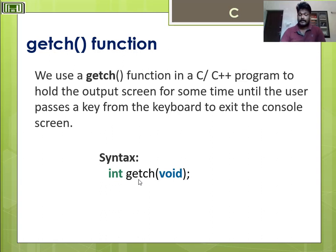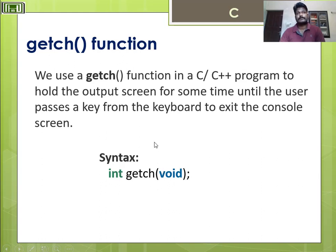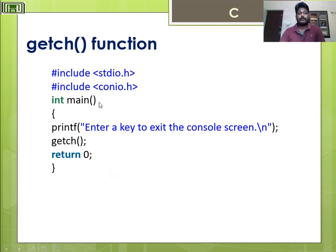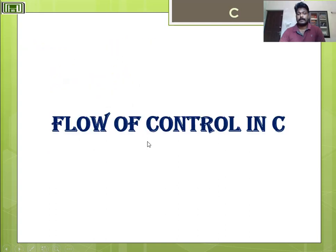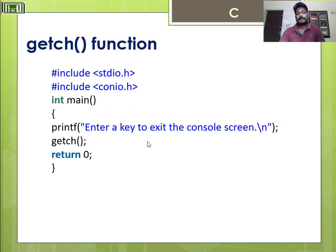One more function is getch. We use the getch function in a C program to hold the output screen until the user presses a key from the keyboard. The syntax is getch(void). To use getch you need to include the conio.h header file. Whenever the program runs, it waits and when you press a key, it returns to the program.